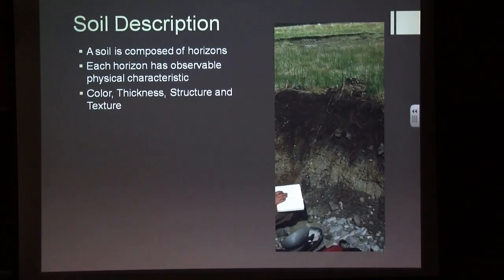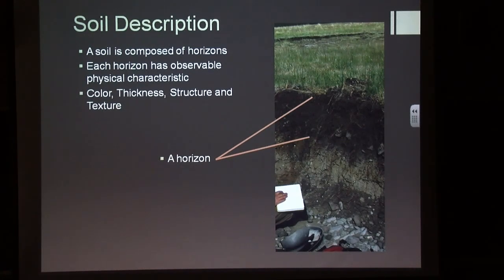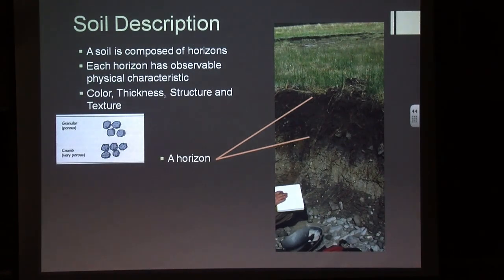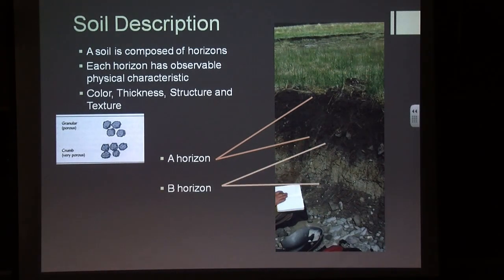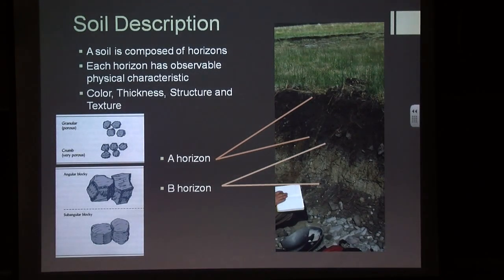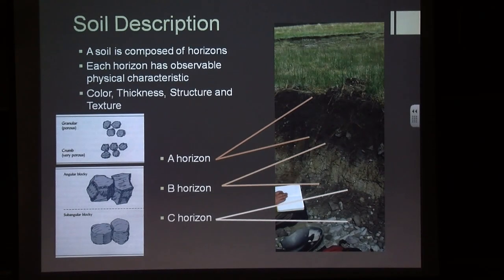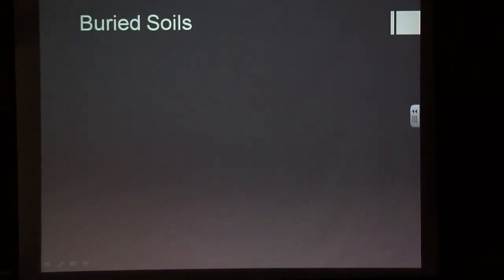Looking more closely at horizons: the A horizon is where you get a lot of organic material — that's where the dark color comes from — and you typically get smaller granular structures. The B horizon has more structure; B horizons really tell you something about the age of the soil — you can get big, hard blocks in blocky or angular forms. The C horizon is what we consider the parent material — what the soil has formed from.